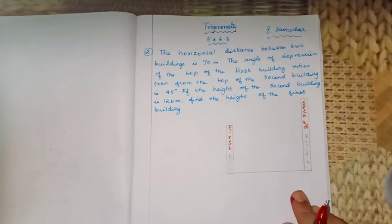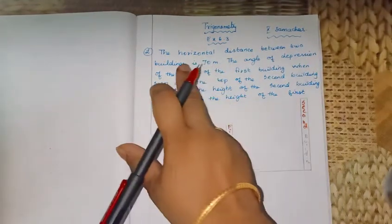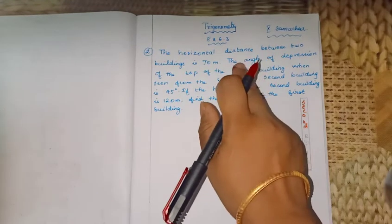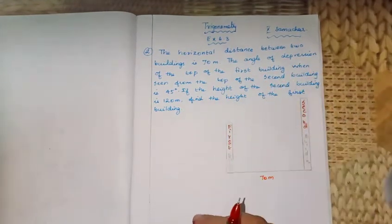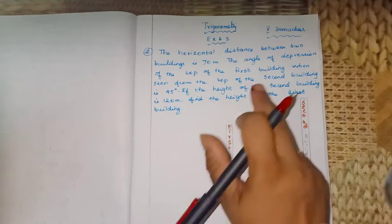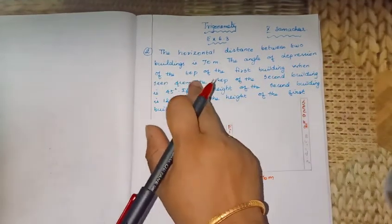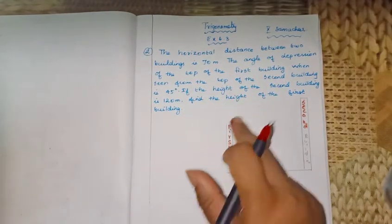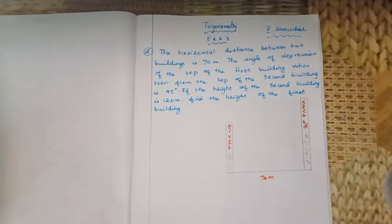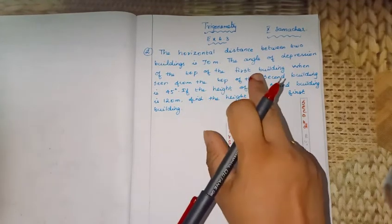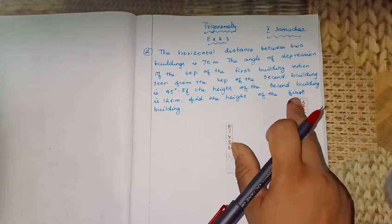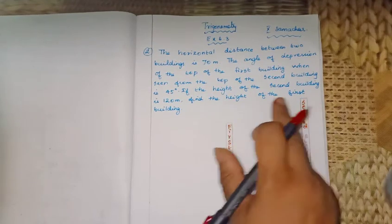From the question: the horizontal distance between two buildings is 70 meters. The angle of depression of the top of the first building, when seen from the top of the second building, is 45 degrees.